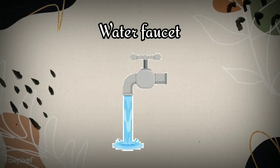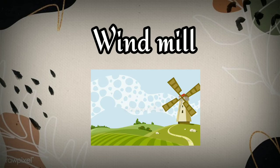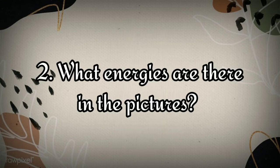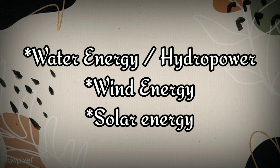There are a water faucet, a windmill, and the sun — jadi disana ada gambar keran air, kincir angin, dan juga matahari. Number 2: what energies are there in the pictures? Energi apa yang ada di gambar-gambar tersebut? For the first picture — gambar keran air — energi air, or hydropower, atau sumber energi air.